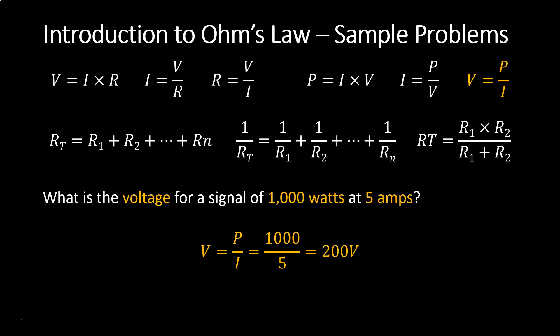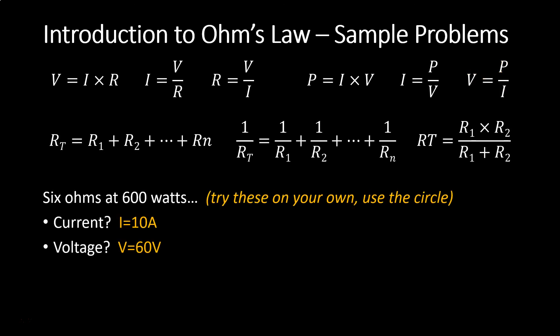I've given you the answers and you should try to solve these on your own using the circle. In this case, you're given 6 ohms, which is R, and 600 watts, which is P, and you're going to solve for the current, which is I, and for the voltage, which is V. Use the circle to find the equation you're looking for, and then take a few moments to solve this.